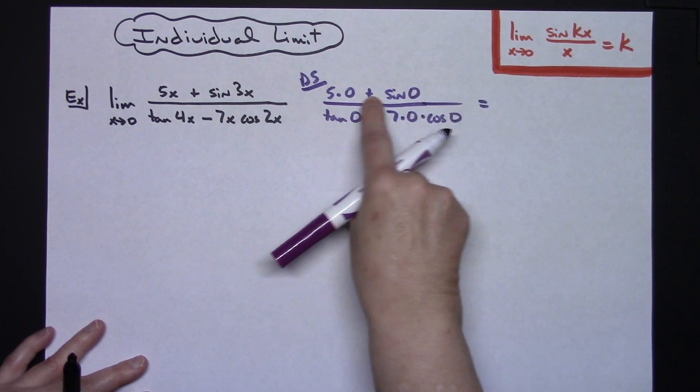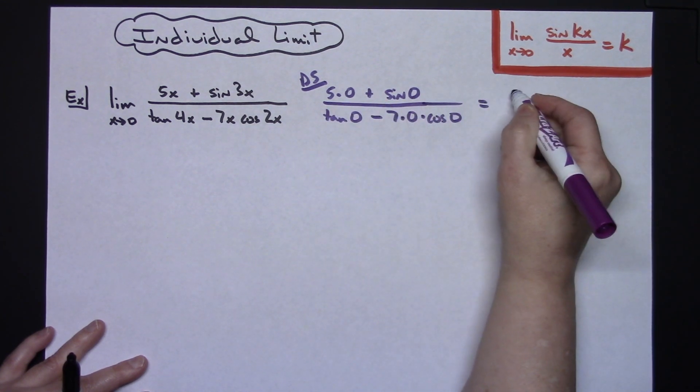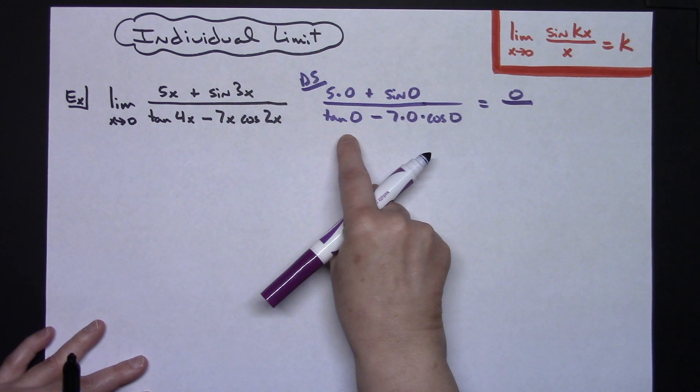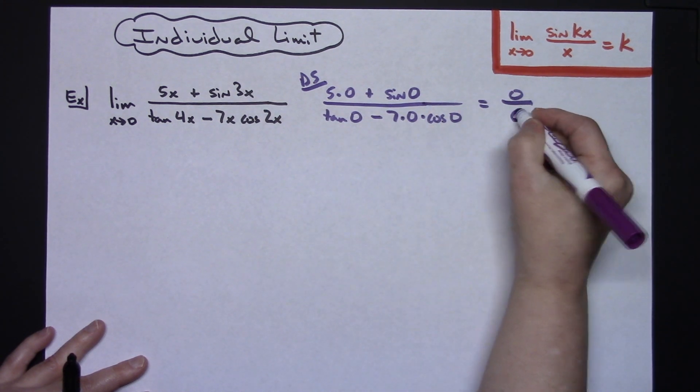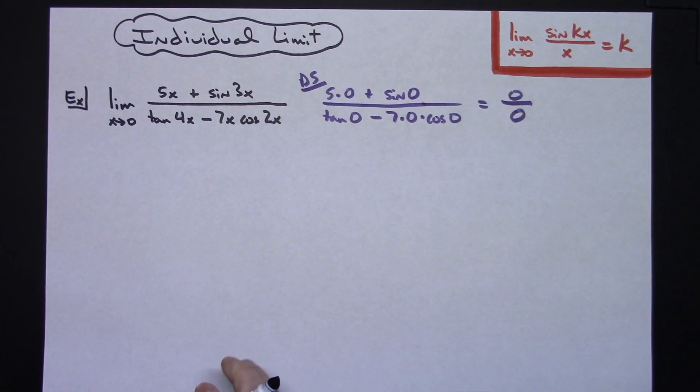That's going to be 0 plus 0. That's clearly going to give me 0 there. And then this is going to be 0 and 0 minus 0 is going to be 0. So it is an indeterminate form there.